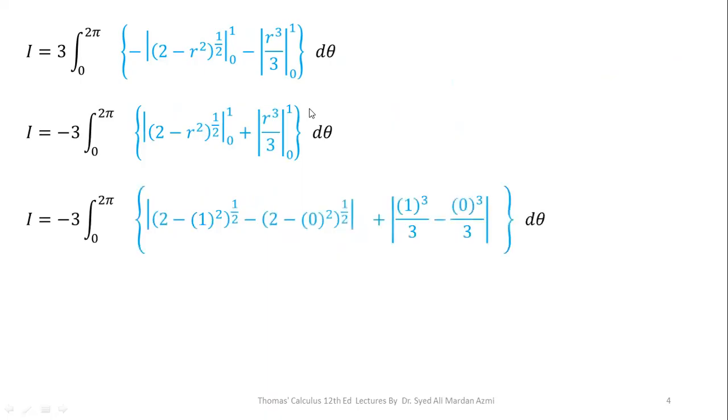In the next step, applying fundamental theorem of calculus, upper limit minus lower limit, we have 2 minus r square raised to power 1 by 2 minus lower limit 2 minus 0 square raised to power 1 by 2 plus for the second term, we have 1 over 3 minus 0 over 3. In this process, we have also taken negative sign outside so that it will be easy for me to simplify the brackets. Simplifying the brackets, 2 minus 1 square raised to power 1 by 2 will be 1. From this term, we have square root of 2 and from here, we have 1 over 3.